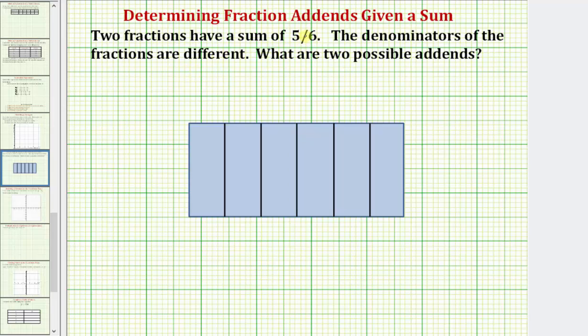Two fractions have a sum of five-sixths. The denominators of the two fractions are different. What are two possible addends? So we're looking for two fractions with different denominators that have a sum of five-sixths.